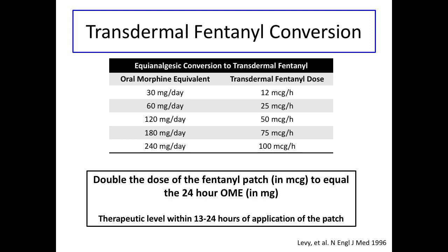Transdermal fentanyl conversions are a bit more tricky because the patches are dosed in micrograms per hour and are only available in certain doses. To convert from a fentanyl patch to OME, simply double the transdermal fentanyl dose in micrograms — this equals your oral morphine equivalent in milligrams. It is also important to note that fentanyl dosed transdermally reaches a therapeutic level in 13 to 24 hours, so when switching from a long-acting oral opioid to a fentanyl patch, the patch should be applied with the last dose of the long-acting oral opioid to avoid pain during the transition.